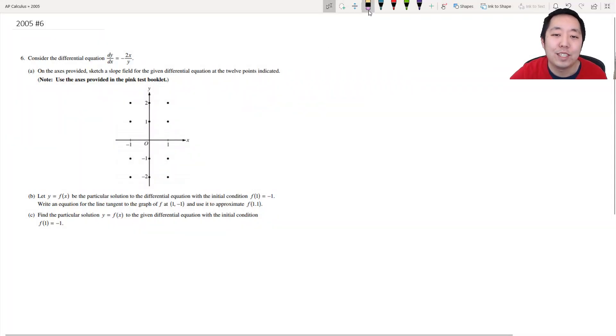Hi all, this is Alan with Bothell STEM Coach and today we are wrapping up the 2005 AP Calculus free response question and here's number six. Consider the differential equation dy/dx is equal to negative 2x over y. Sketch a slope field of the differential equation. These are always a little annoying.